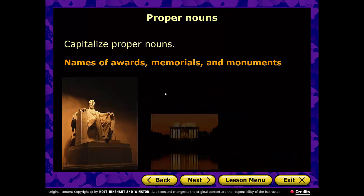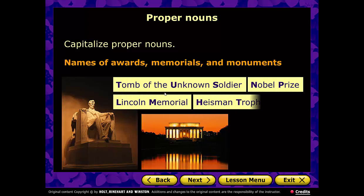Names of awards, memorials, and monuments are also capitalized. For example: Tomb of the Unknown Soldier, Nobel Prize, Lincoln Memorial, Heisman Trophy, Jefferson Memorial, Washington Monument — all of those would be capitalized.